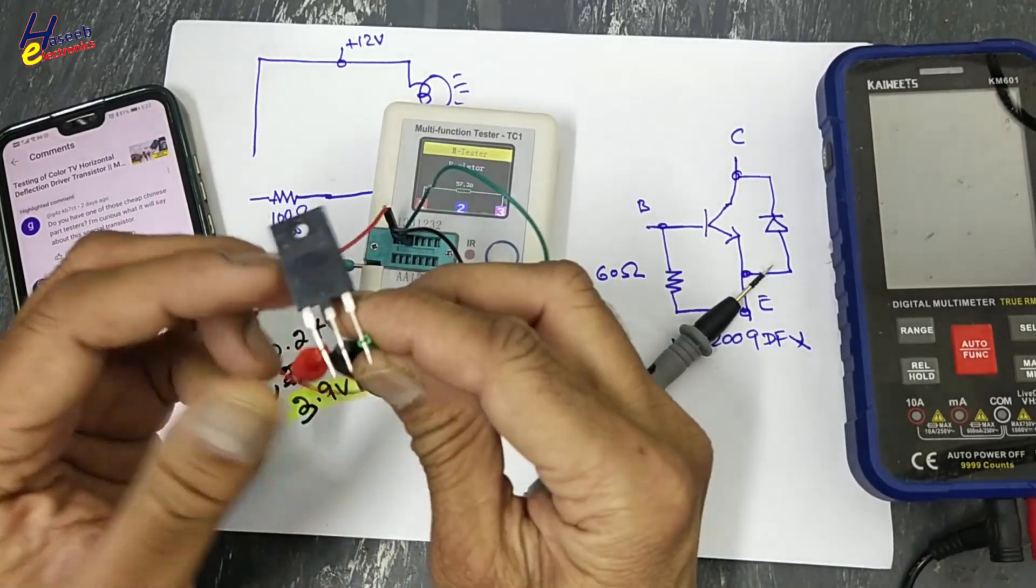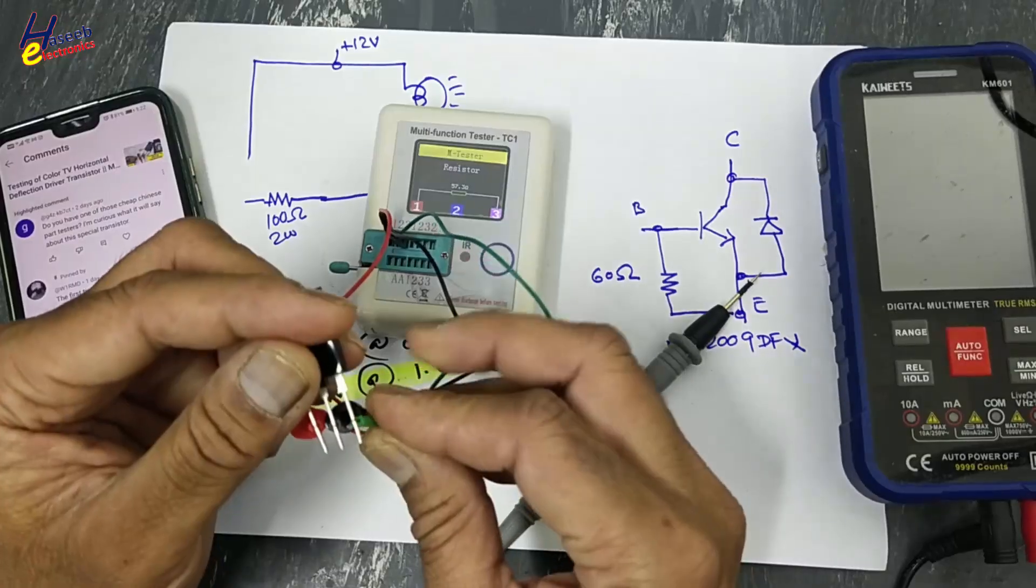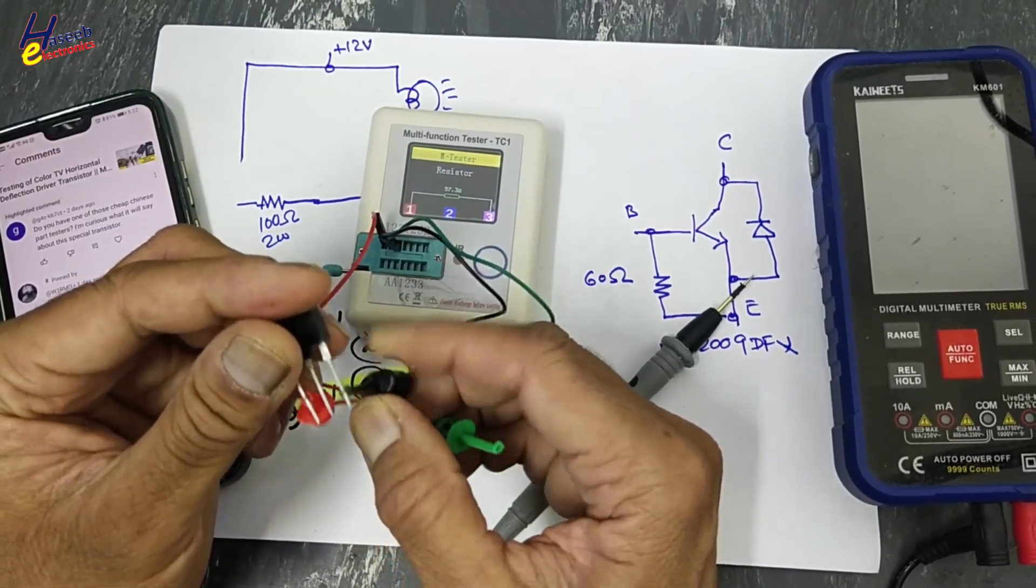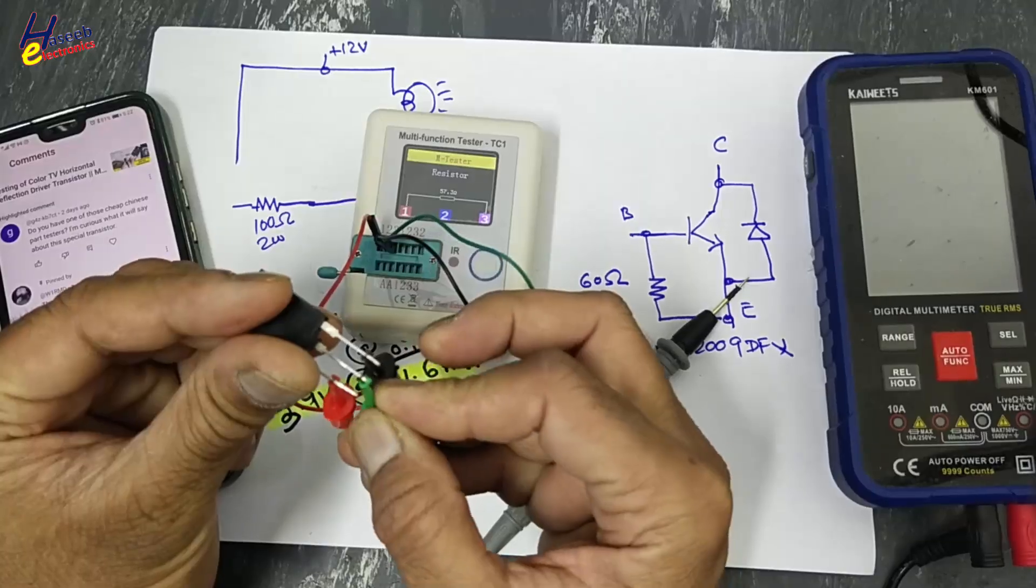Let's check it again. 57 ohms between pin 1 and 3.